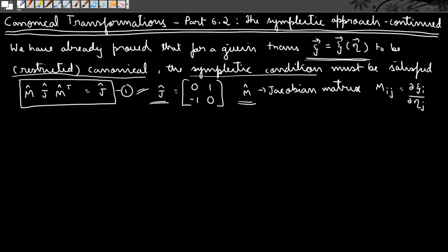In this video we will prove that the symplectic condition is a necessary and sufficient condition for a general transformation. So far we considered only restricted transformations; now we are going to prove that even for a general transformation which may depend on time as well, the symplectic condition must still be satisfied.